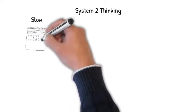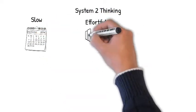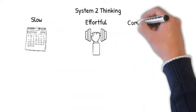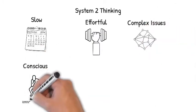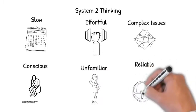System 2 thinking is slow and effortful. It's better for complex issues, requiring more conscious and intentional thinking, and tends to occur in situations that are new and unfamiliar. System 2 tends to be more reliable.